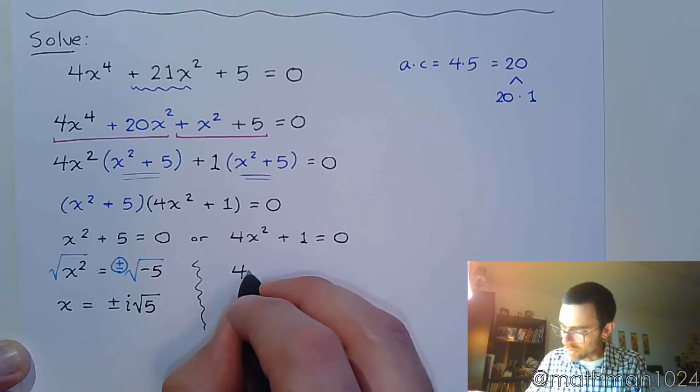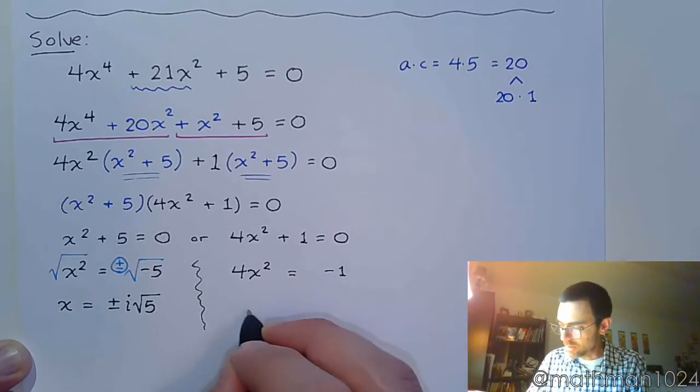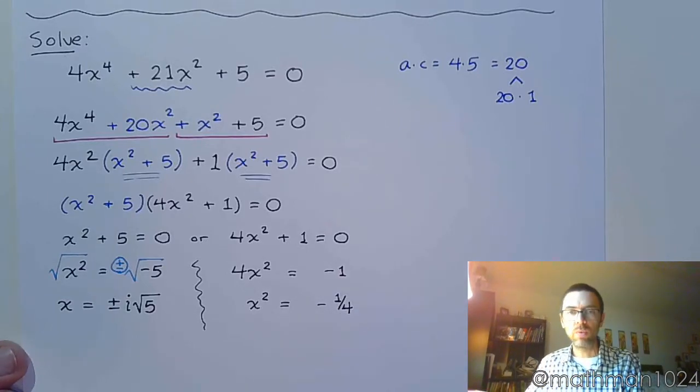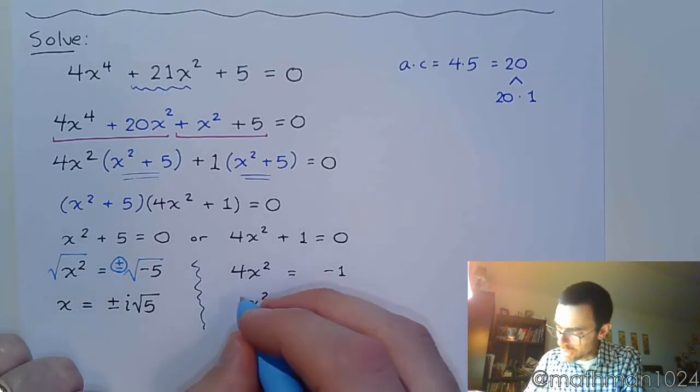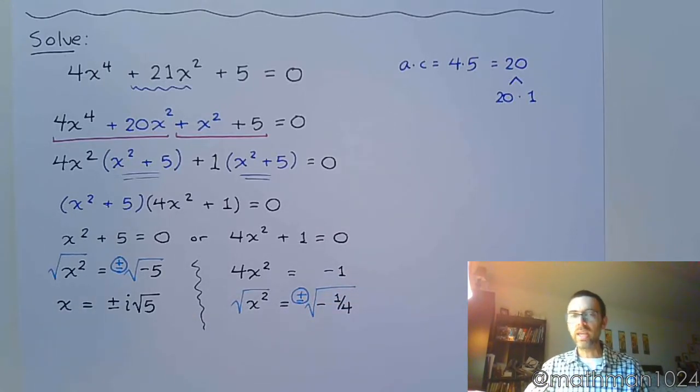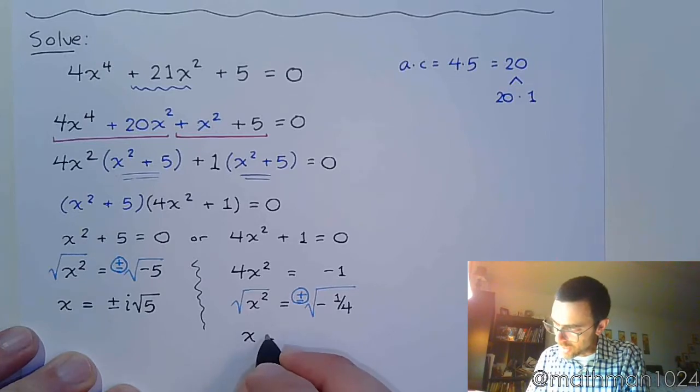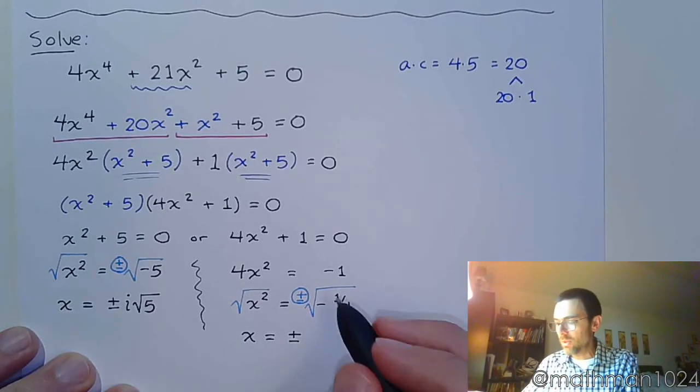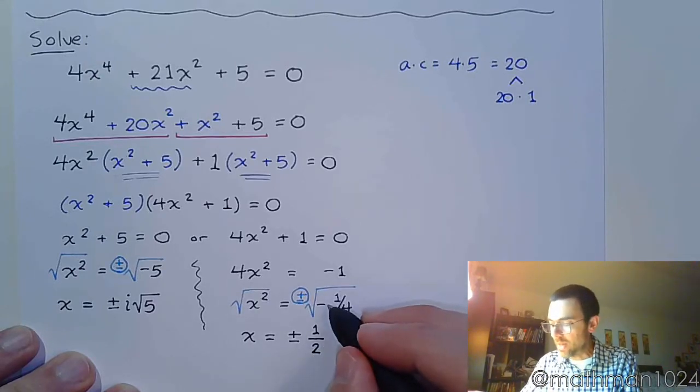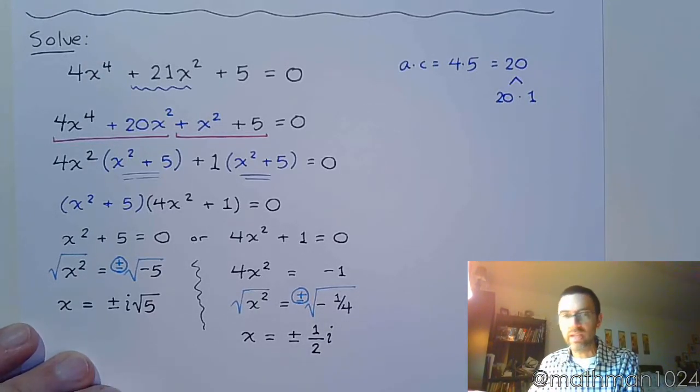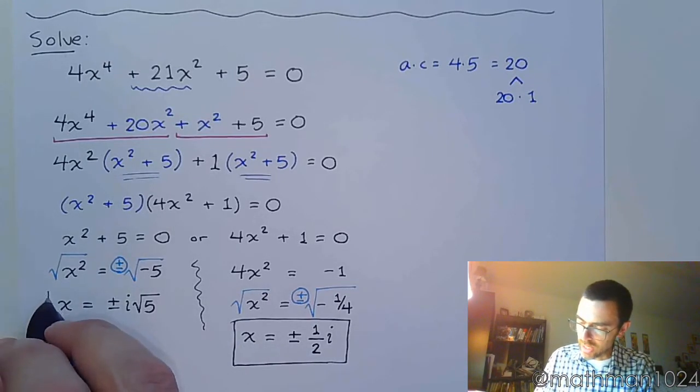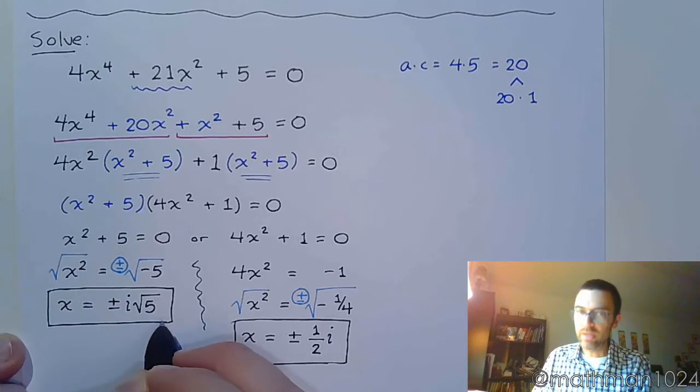Over here, let's get the x² by itself. So 4x² = -1. Divide both sides by 4. x² = -1/4. And now we apply that square root property on both sides. Again, don't forget the plus or minus. So x = ±√(-1/4). The square root of 1 is 1, the square root of 4 is 2, and the negative inside makes that i on the outside. So we end up with 4 solutions, and all 4 of these guys happen to be imaginary.